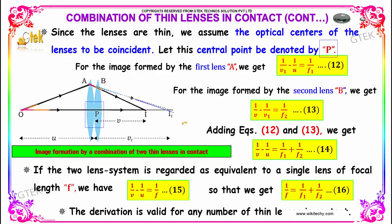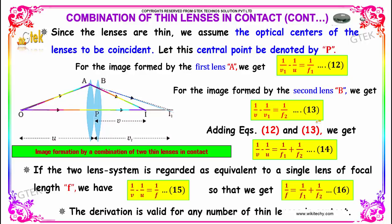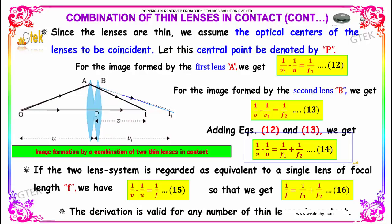For the image formed by the first lens A, we get 1/V1 − 1/U = 1/F1, marked as equation 12. For the image formed by the second lens B, we get 1/V − 1/V1 = 1/F2, marked as equation 13. Adding these two equations 12 and 13, we get 1/V − 1/U = 1/F1 + 1/F2, marked as equation 14.